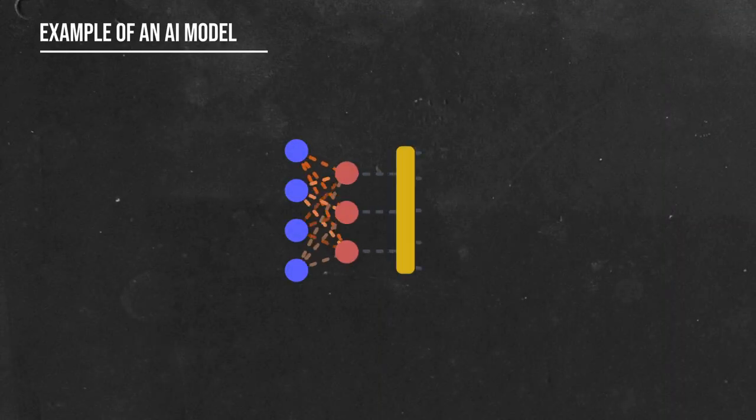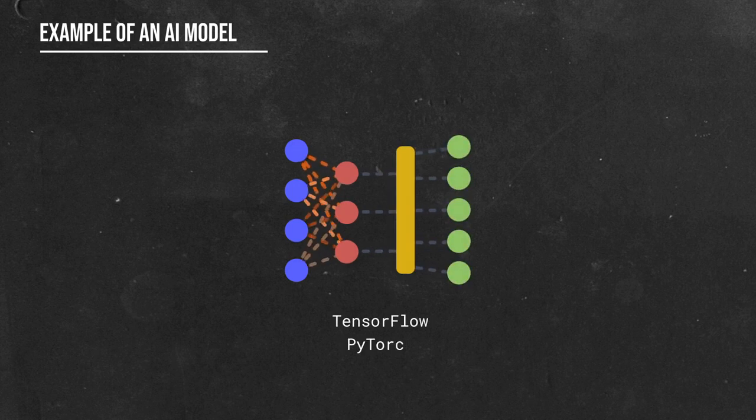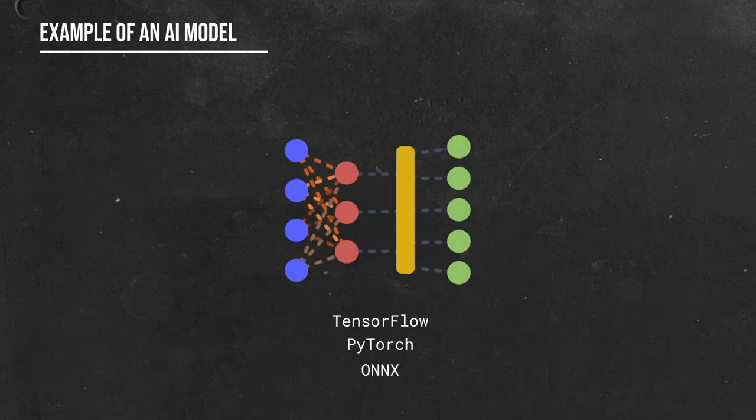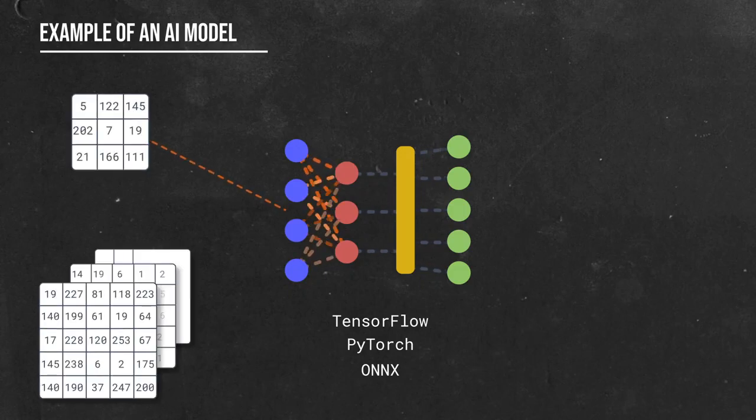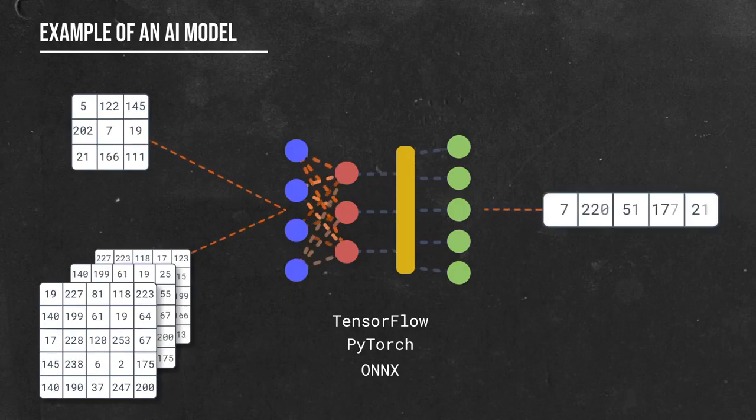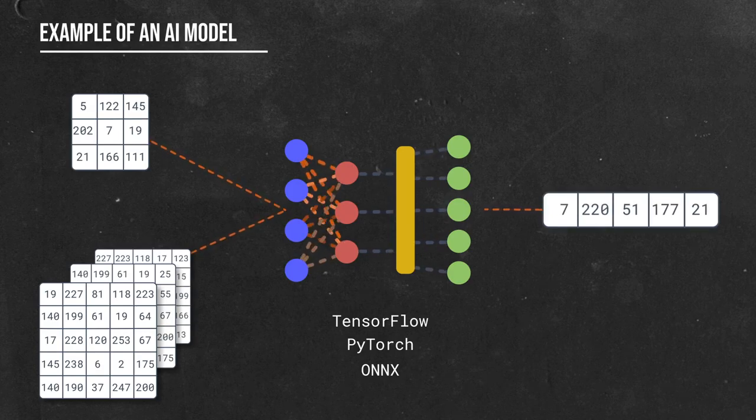A model is a data structure that contains an AI model for a particular backend, such as TensorFlow, PyTorch, or ONNX. Models are the things that do the inferring. They take one or more tensors as input and produce one or more tensors as output. Putting these two structures together, we can perform inferences.